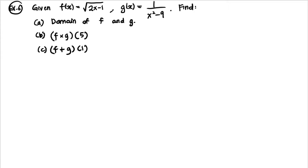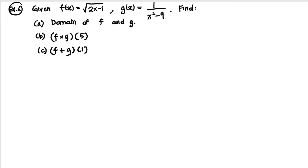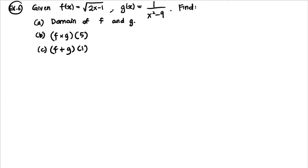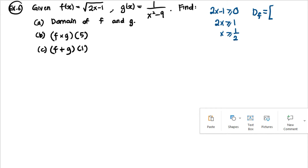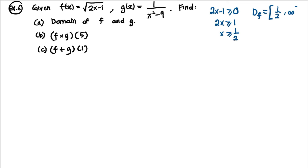For example 6, we are given f(x) = √(2x - 1) and g(x) = 1/(x² - 9). First, find the domain of f: the expression inside the square root must satisfy 2x - 1 ≥ 0, so x ≥ 1/2. Therefore the domain of f is [1/2, ∞). Now for the domain of g: the denominator x² - 9 must not equal zero.